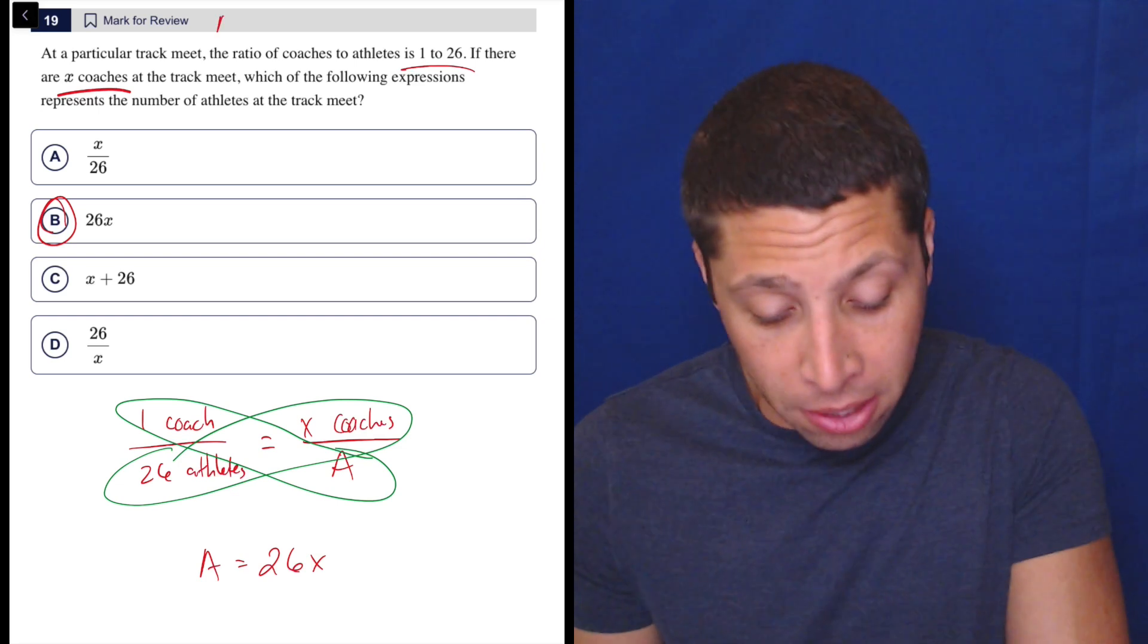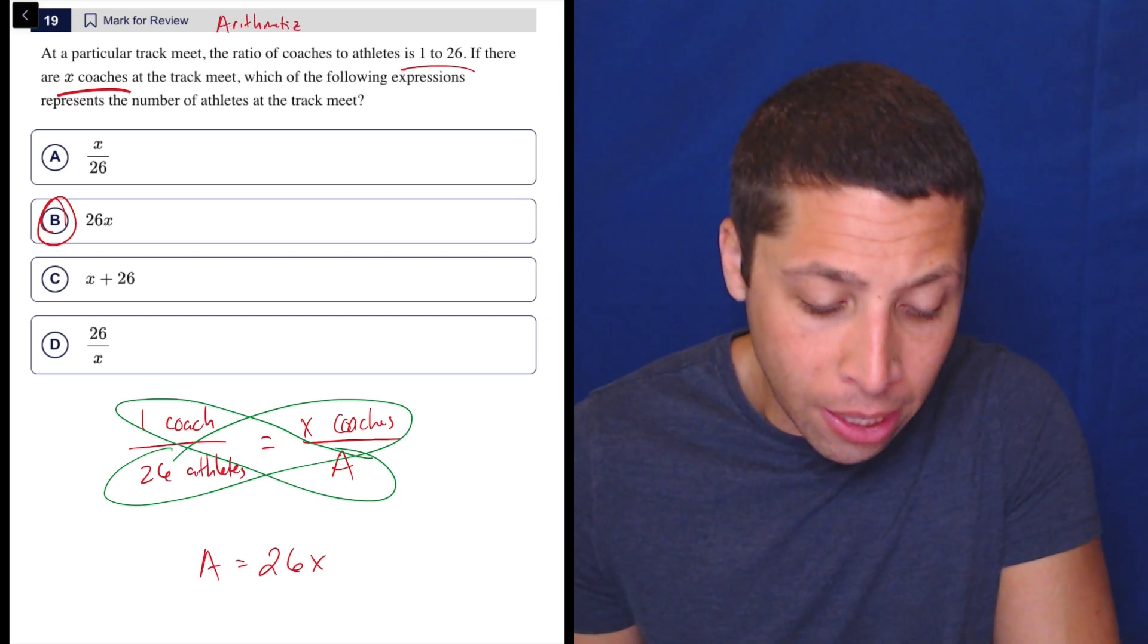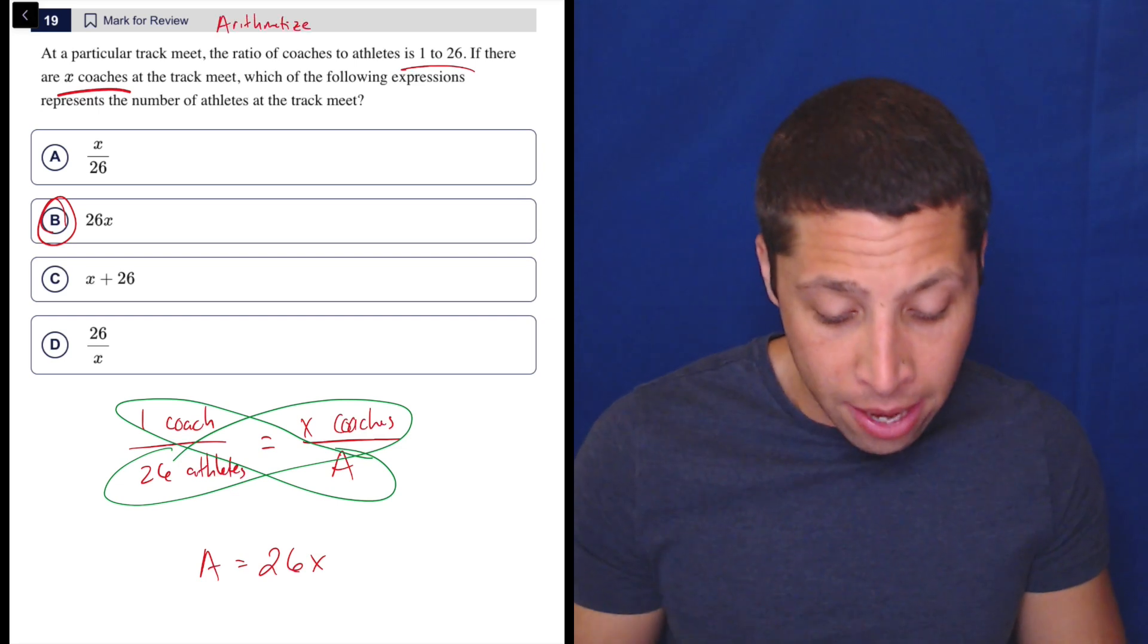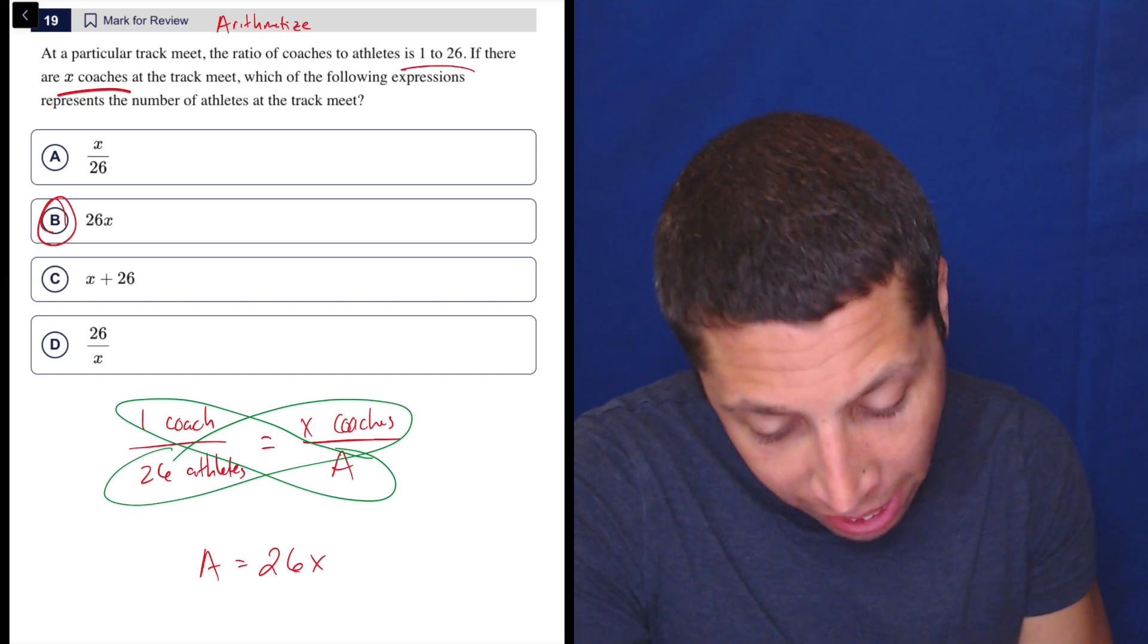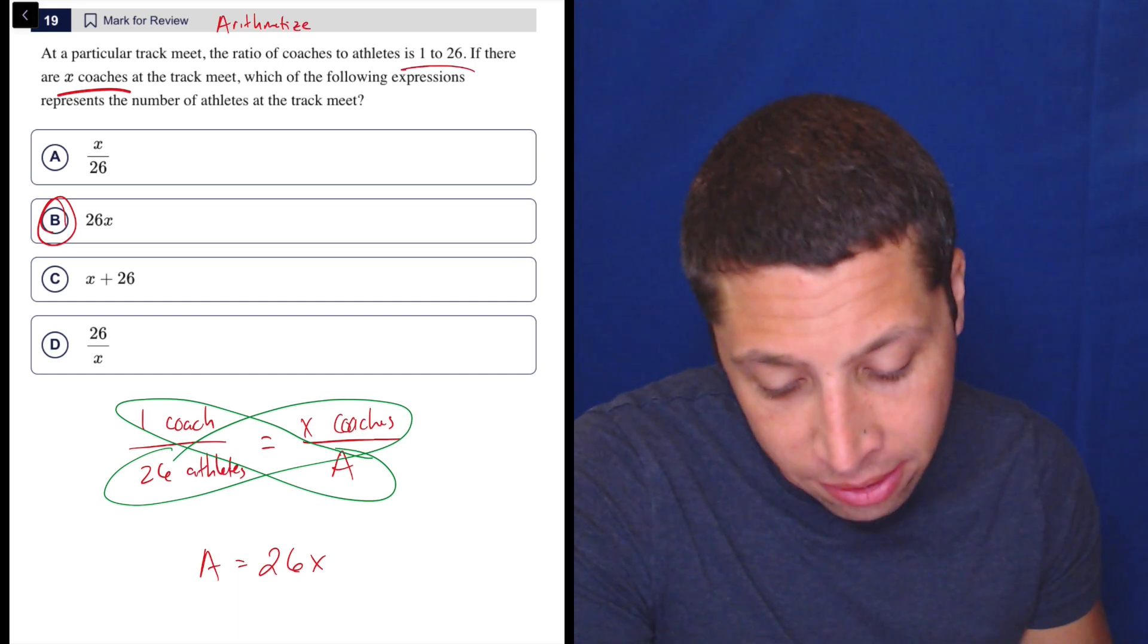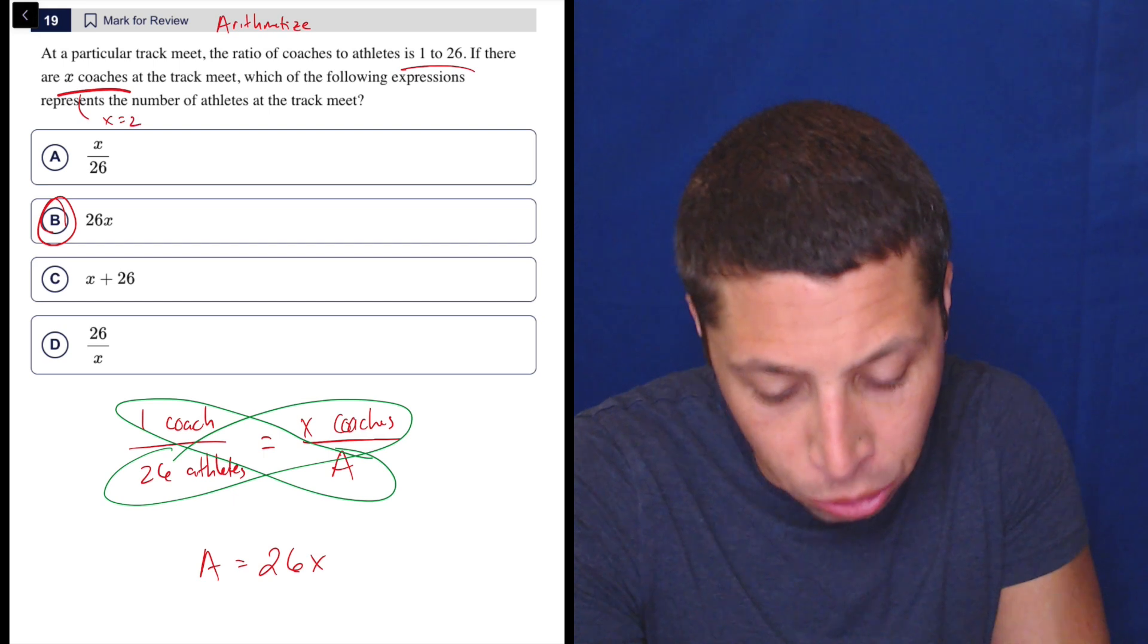You could arithmetize here. I don't think it's particularly helpful, but in a way, they do say that we have, you know, since they have one to 26, you could say, okay, well, what happens if there were two coaches?